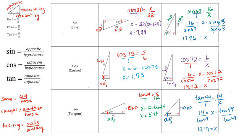Some patterns here: use sine whenever hypotenuse and opposite are labeled. Use cosine whenever adjacent and hypotenuse are labeled. If there's no hypotenuse labeled — only opposite and adjacent — use tangent. Also notice: when x is on top, you just multiply. When x is on the bottom, you end up dividing.